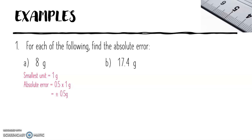B: For 17.4 grammes, the smallest unit is 0.1 grammes. The absolute error is 0.5 times 0.1 grammes, which equals plus or minus 0.05 grammes.